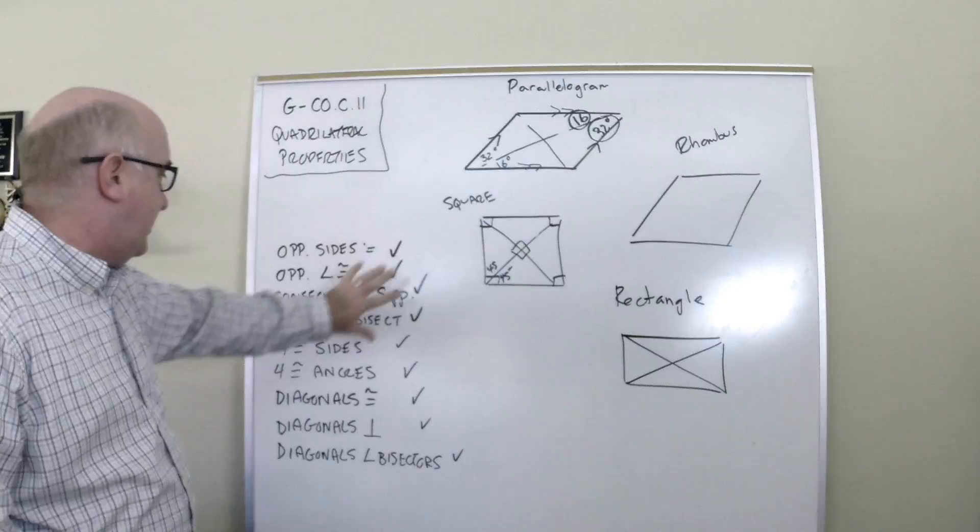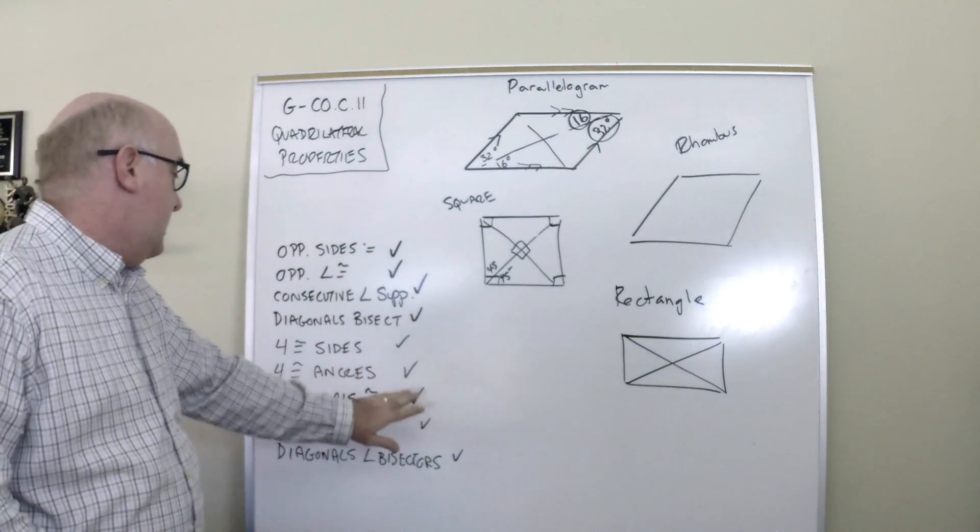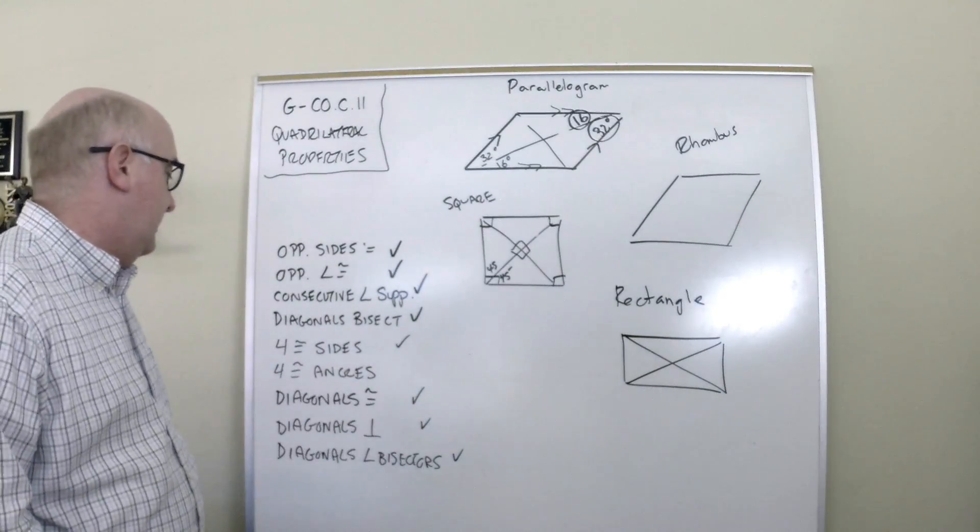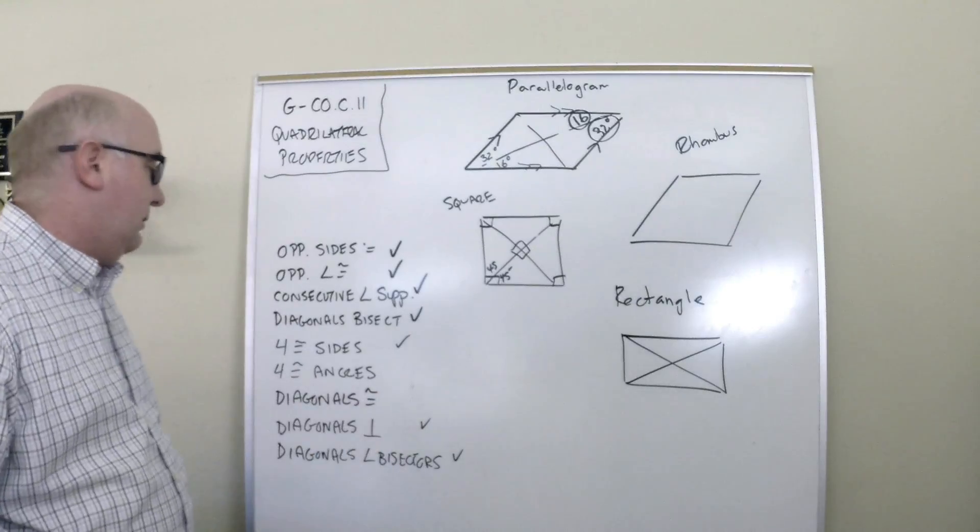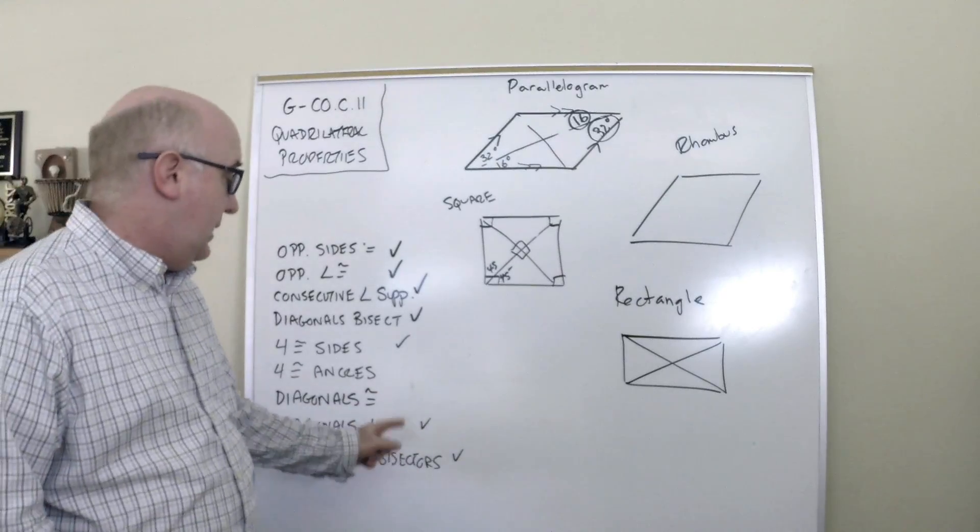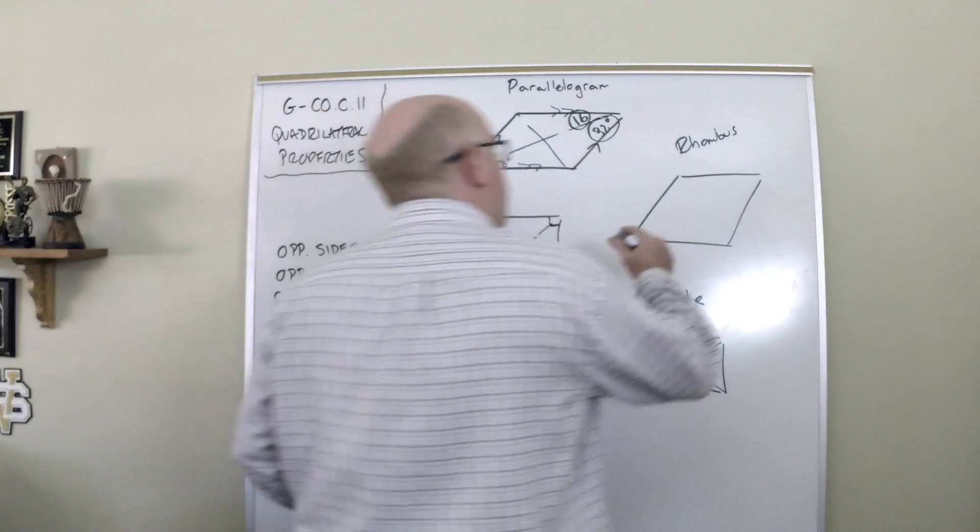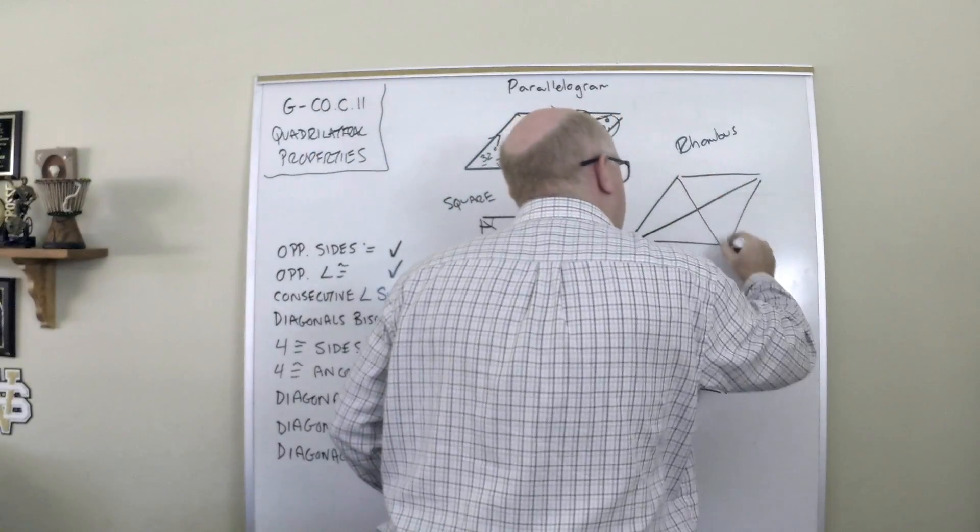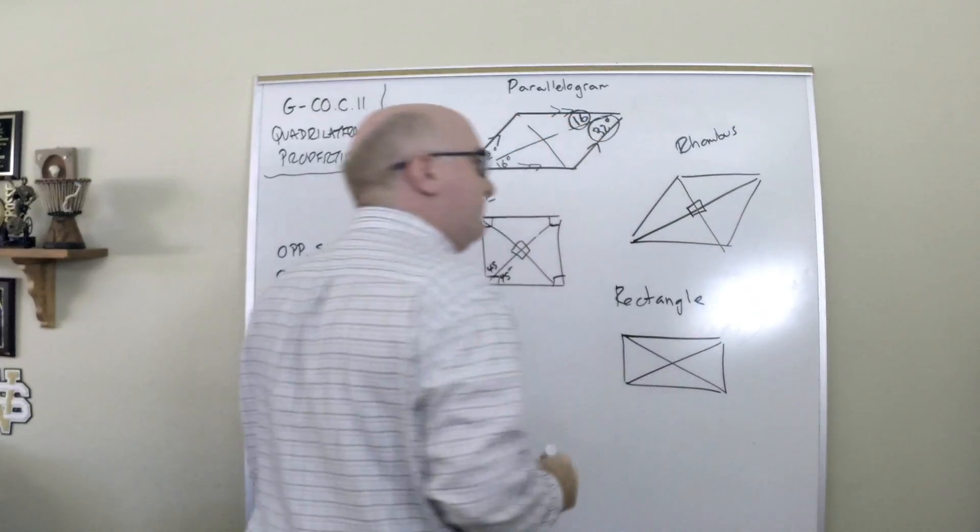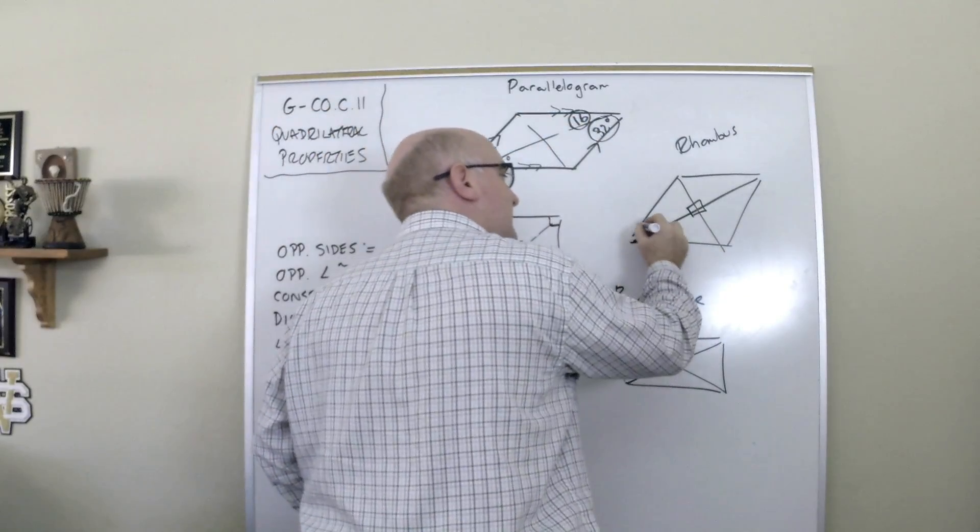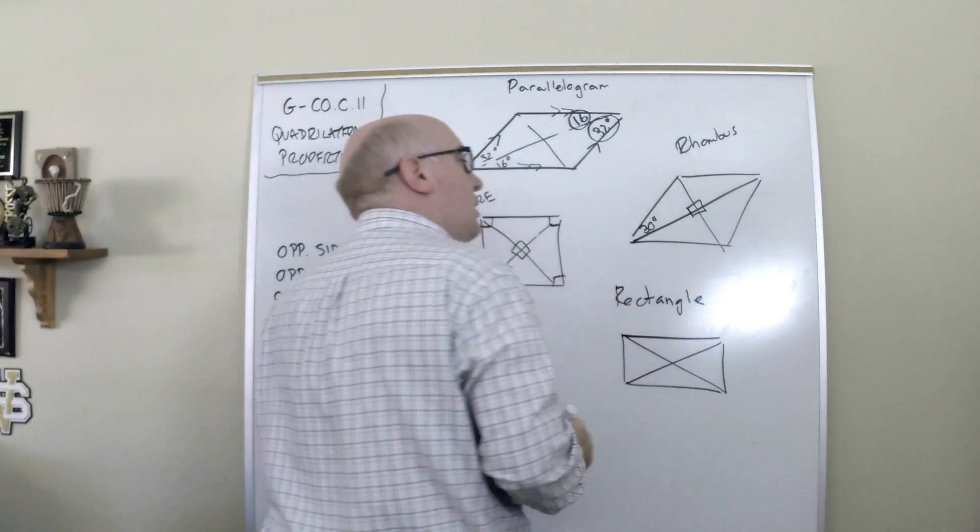The rhombus is a type of parallelogram so it holds all those characteristics. It doesn't have four equal angles. Its diagonals are not congruent but they are perpendicular and they are angle bisectors. So if we put in the diagonals, we know that they would hit at 90.